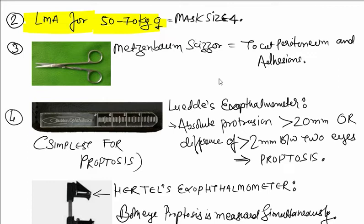Next instrument is the Mesin Bomb seizure. This is to cut peritoneum and adhesions.